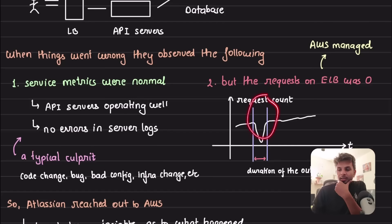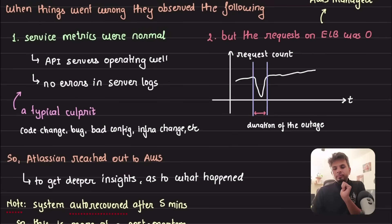When they looked at it, to bring everybody to the same page, when we use ELB it's typically AWS managed. The infrastructure of Atlassian is on AWS and they are using AWS managed load balancer called Elastic Load Balancer which I'm using the term ELB here. As soon as things went wrong they saw application metrics were fine but the load balancer was not.